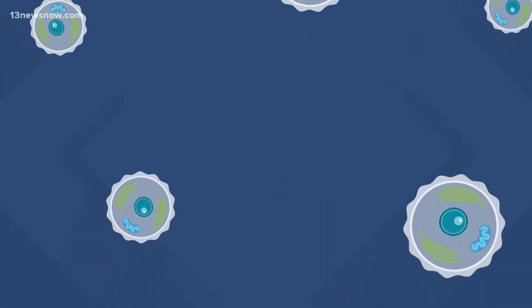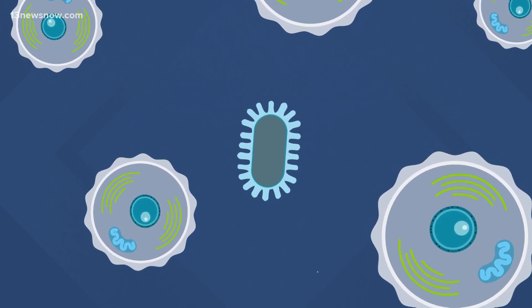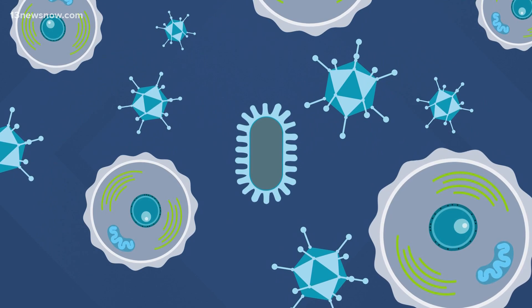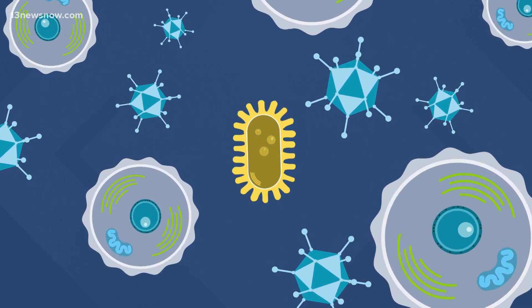Most vaccines put a weakened or inactivated germ into your body, and that germ triggers an immune response, teaching your body how to fight back if it ever encounters the actual full-strength virus.